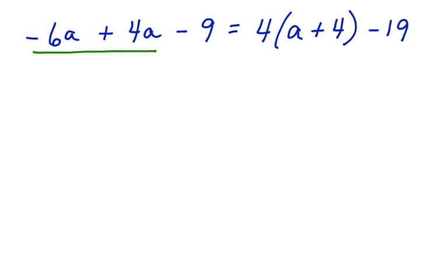Negative 6a plus 4a is negative 2a minus 9 equals. Now look at the right side of the equation. There's a set of parentheses here.